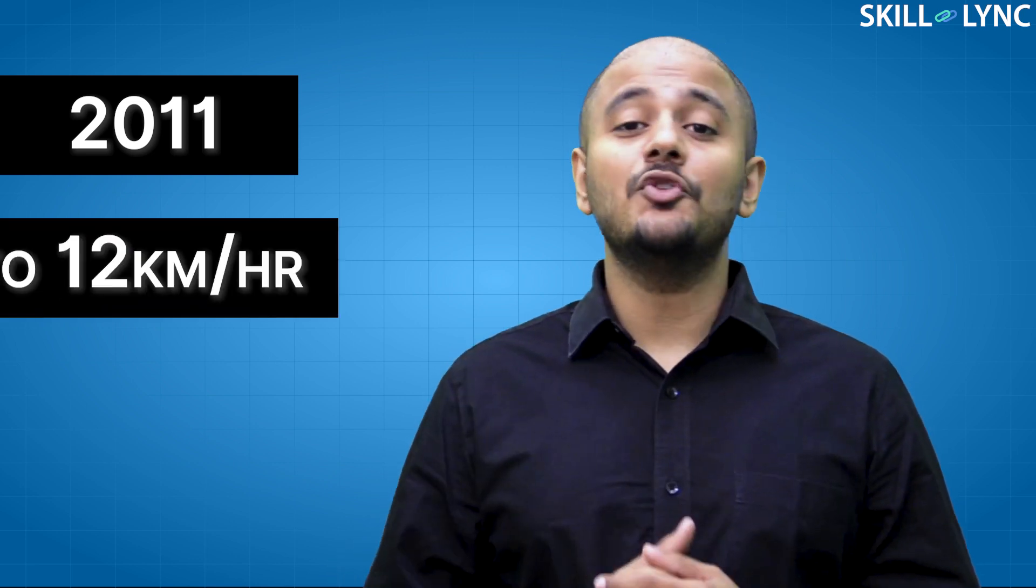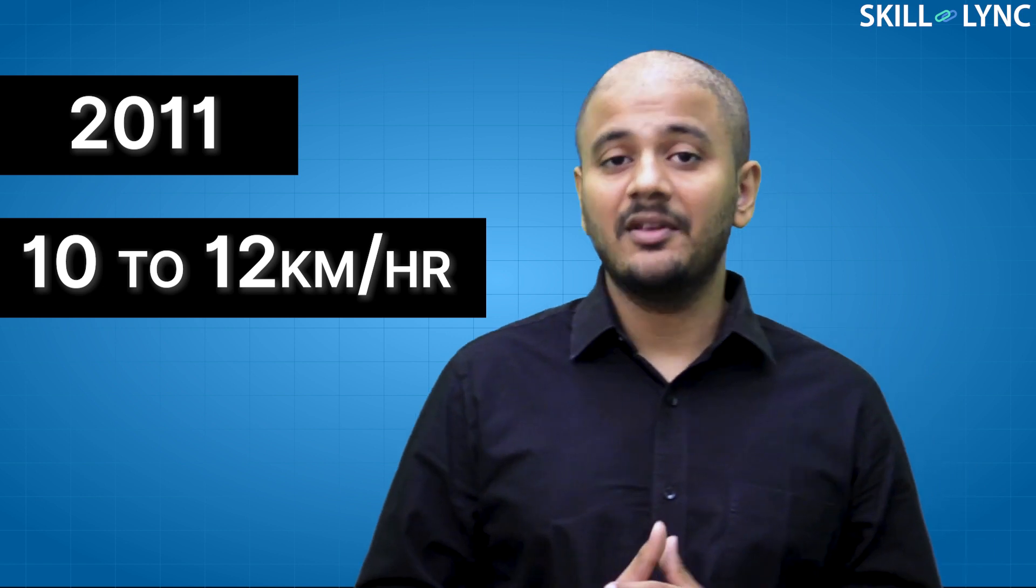Thus, DRS is introduced to rectify this issue. This system was introduced in F1 cars in 2011. The speed of the car may increase by 10 to 12 kilometers per hour after activating DRS.